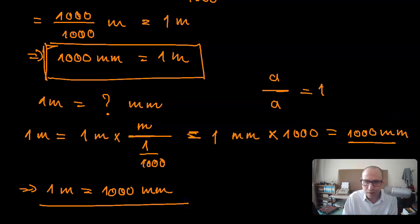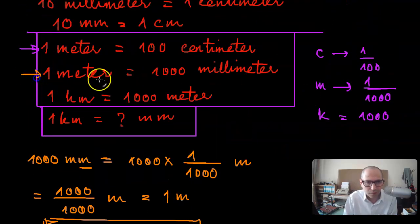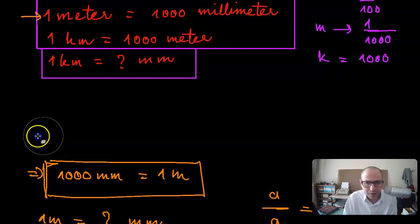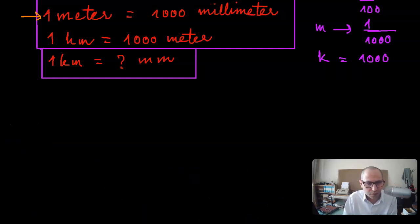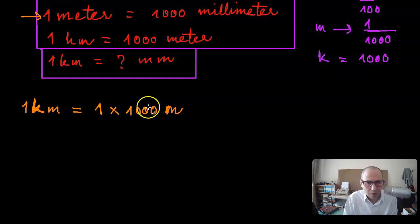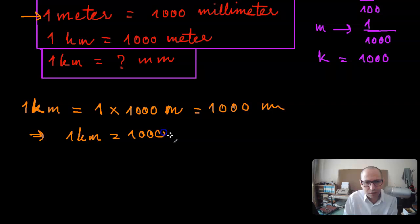In exactly the same way you can derive that one kilometer equals a thousand meters. One kilometer is one times kilo, and kilo equals a thousand, so that's one times a thousand meters, which is a thousand meters. Therefore one kilometer is the same thing as a thousand meters.